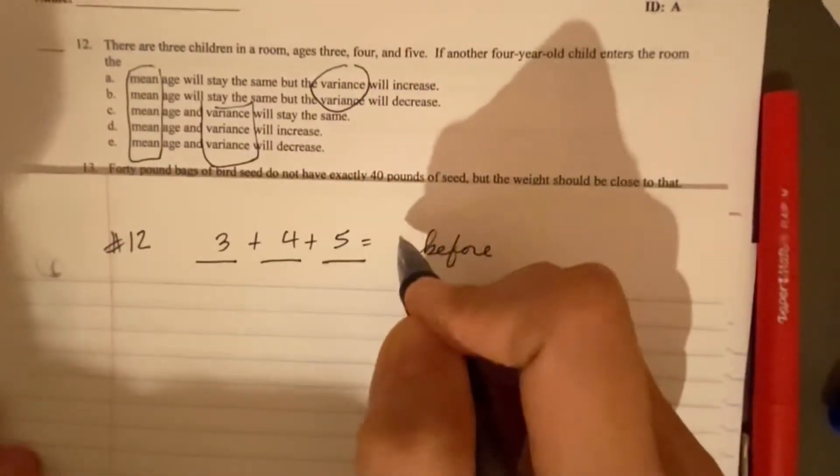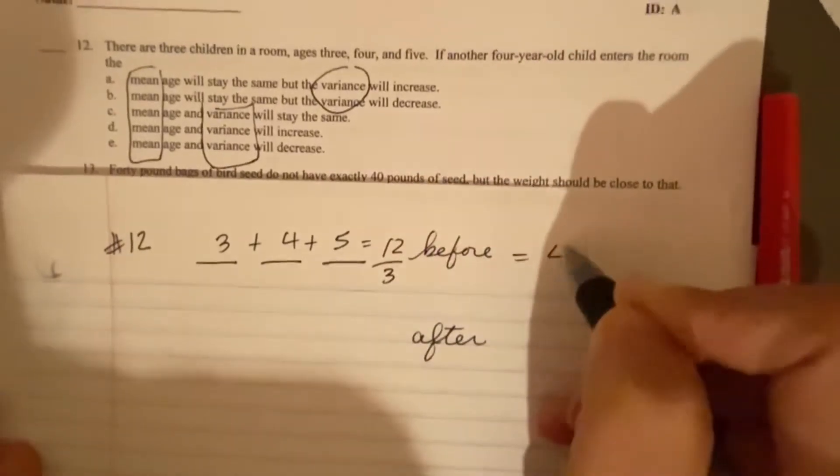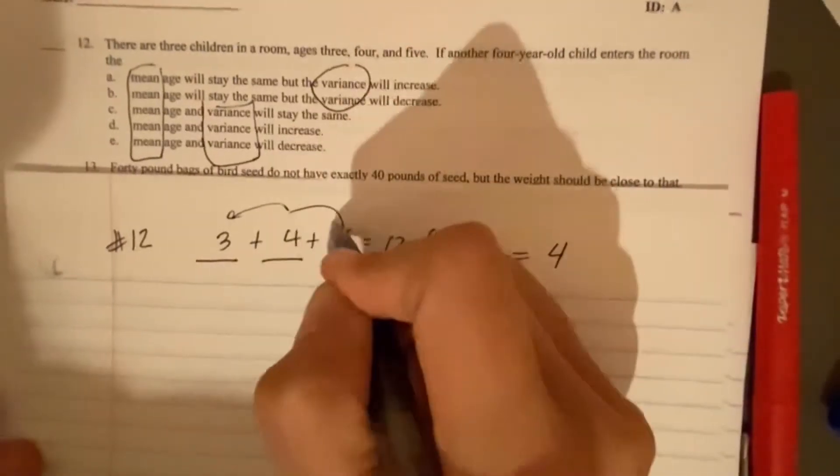So the mean, we add those numbers up and divide by three. So the mean is four, which makes sense. That's the number in the middle.